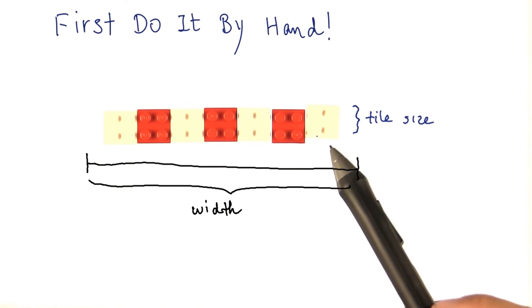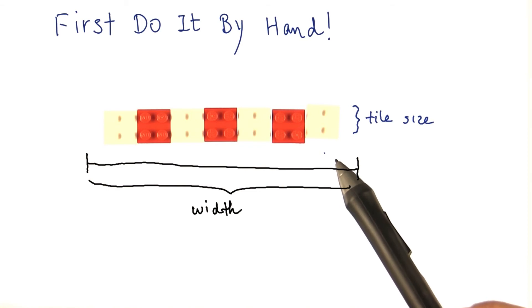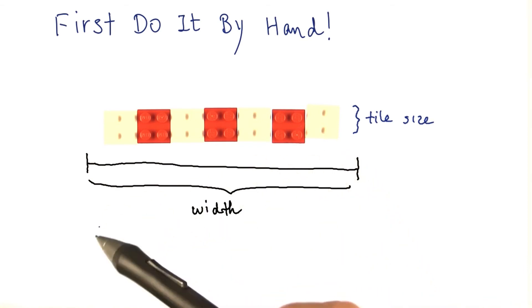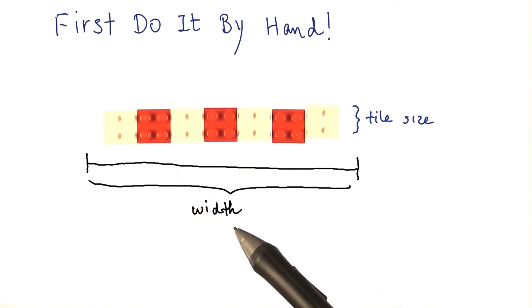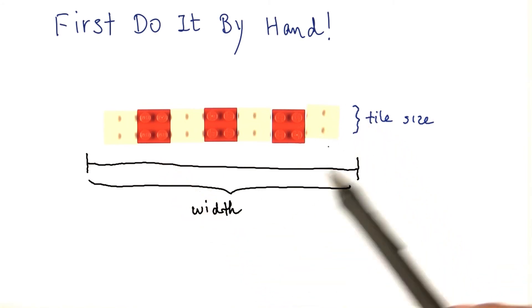The architect tells us we're supposed to start and end with a tile of the same color. And the question is, how many tiles does one need to order? It's pretty clear that you need one more white tile than the red tiles. But how many clearly depends on the size of the tiles and the total width of the wall.